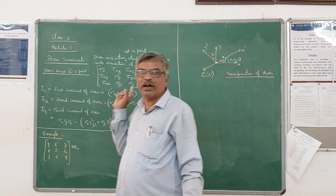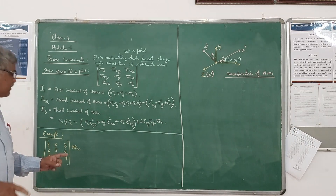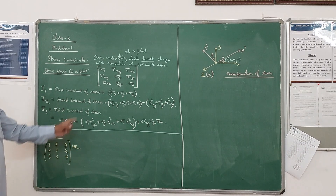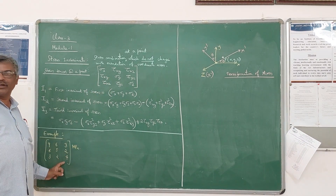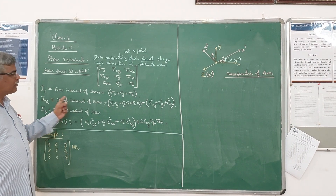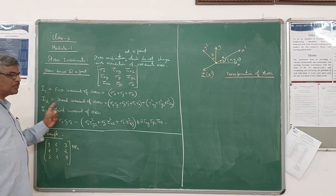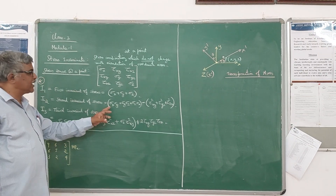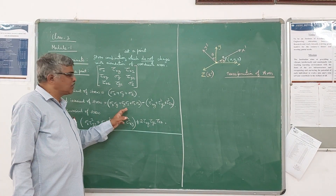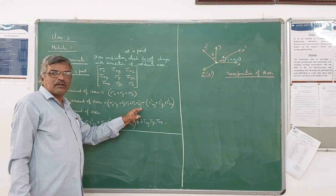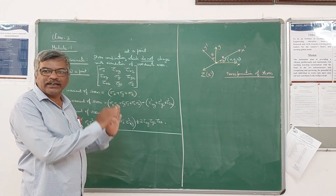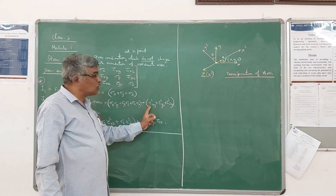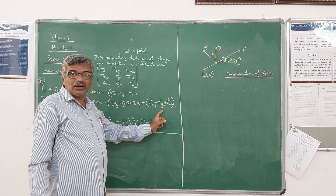I1 equals sigma x plus sigma y plus sigma z. For I2, the formula involves sigma x times sigma y plus sigma y times sigma z plus sigma z times sigma x, minus the bracket containing tau squared xy plus tau squared yz plus tau squared zx.